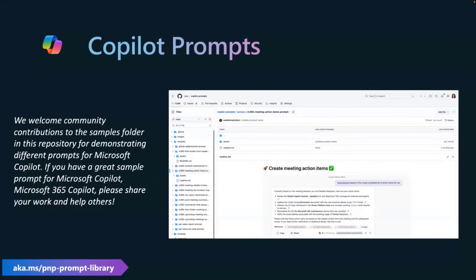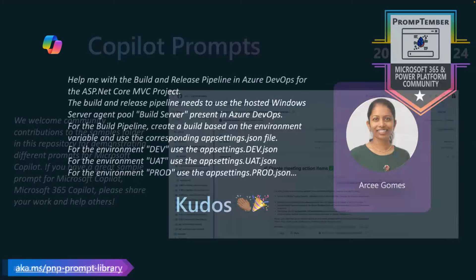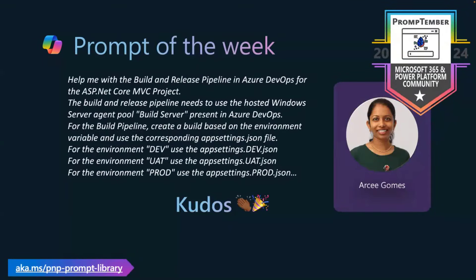We've got a sample folder in the repository for sharing Copilot prompts. If you're using Microsoft Copilot and have a prompt you'd like to share, we'd love to have it — we look through those and highlight some of them. This week we're highlighting Arcee, who has a prompt for ASP.NET Core MVC to build an Azure DevOps pipeline. Check that out — it might inspire your own build pipeline work.